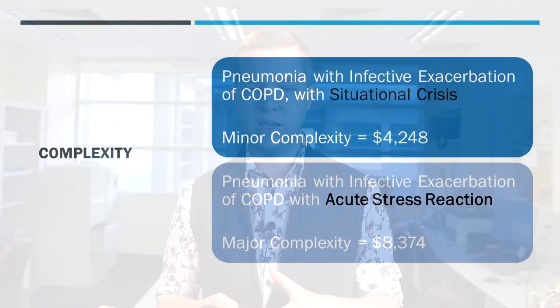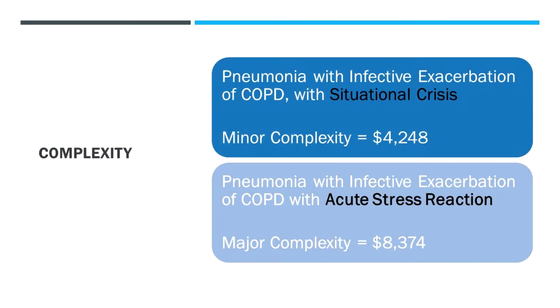Here's an example: if someone has pneumonia and an acute exacerbation of COPD with a situational crisis, that is not actually going to add any complexity and you're going to come out with just over four thousand dollars. If you have the same presentation and instead document the impact of their mental health as an acute stress reaction — which is a more diagnostic term — that is going to add significant complexity, take it up to a major complexity group, and earn a bit over eight thousand dollars for that admission, which is more reflective of the additional resources going into looking after that patient.